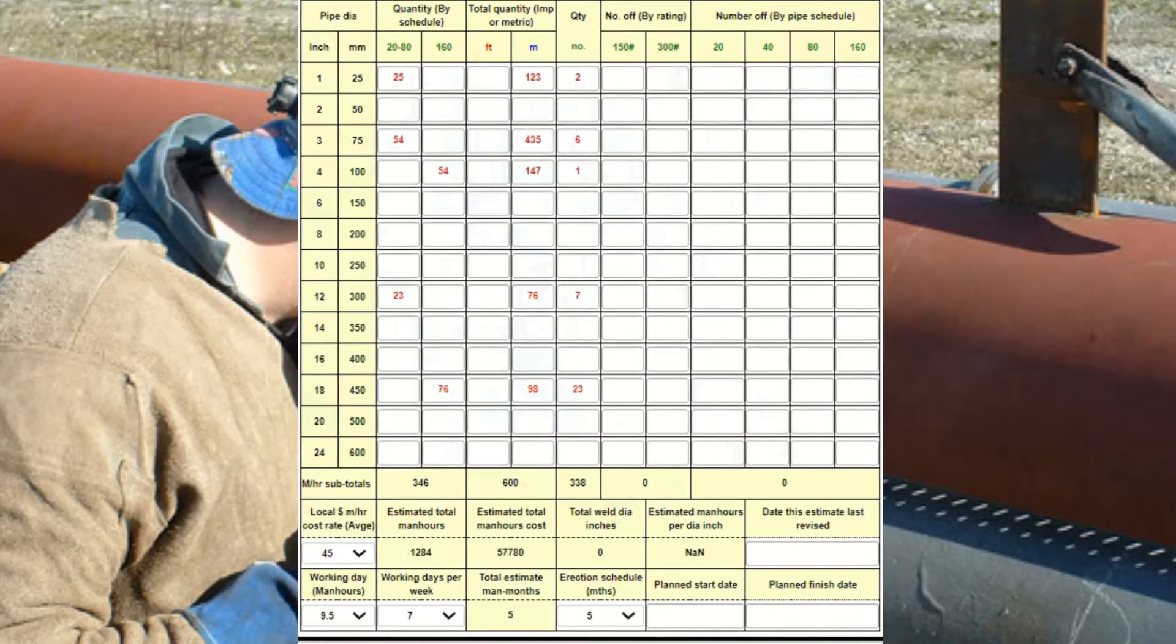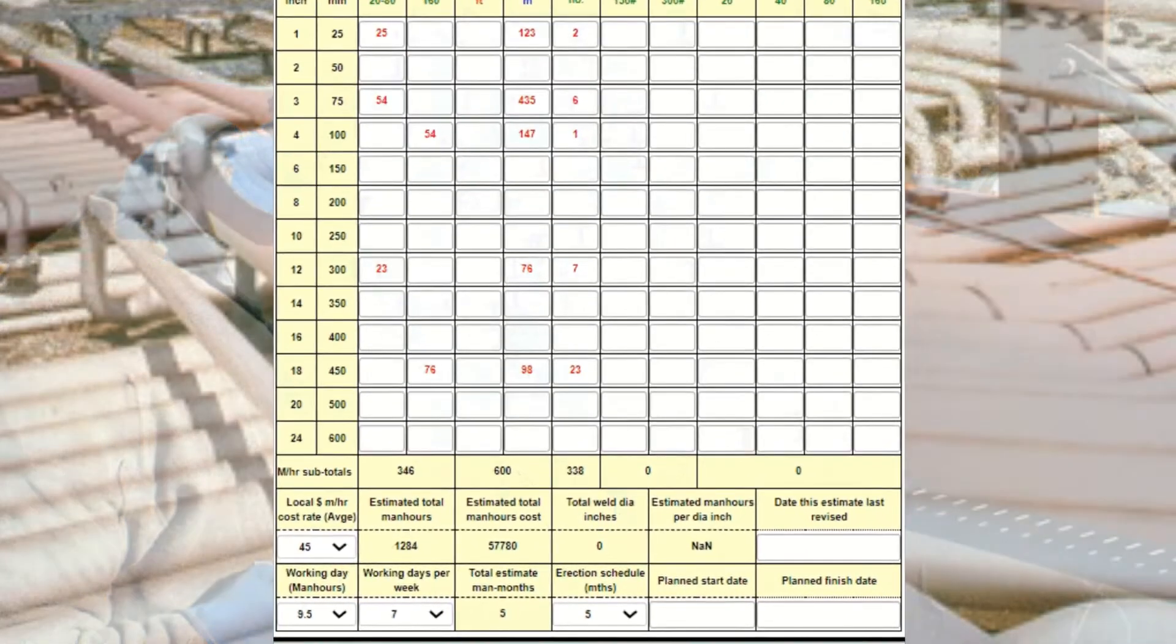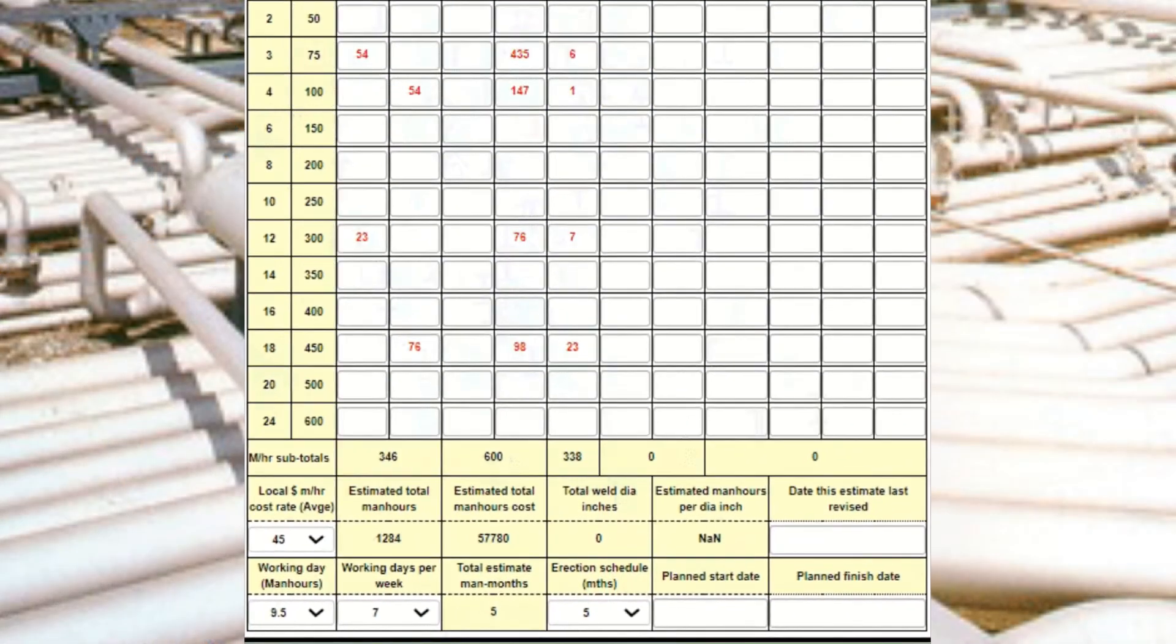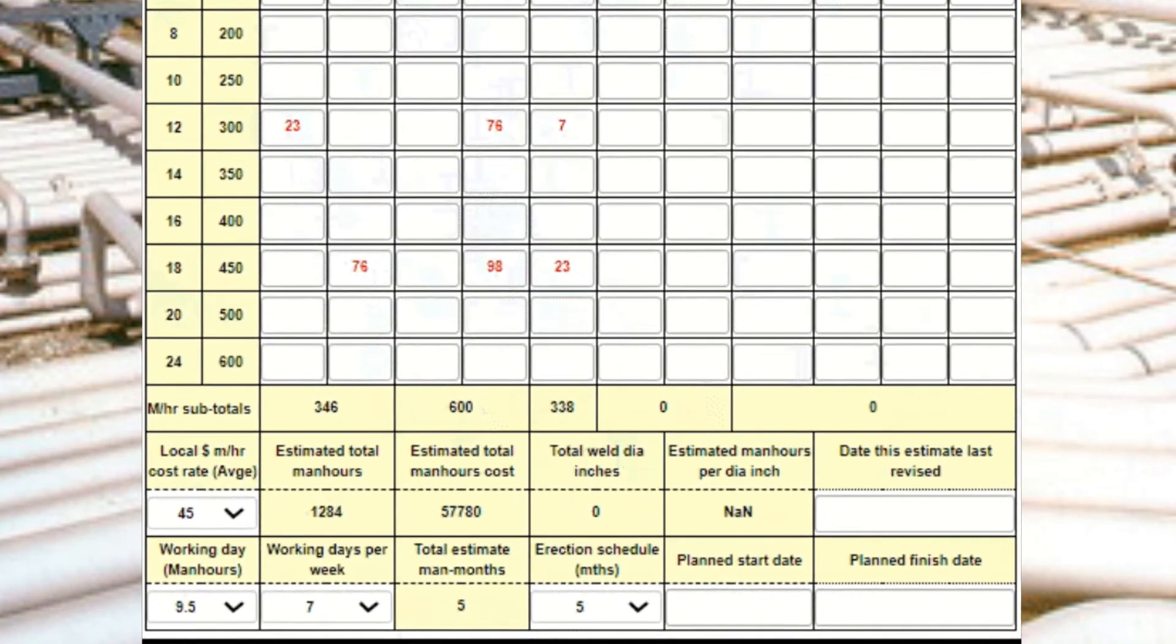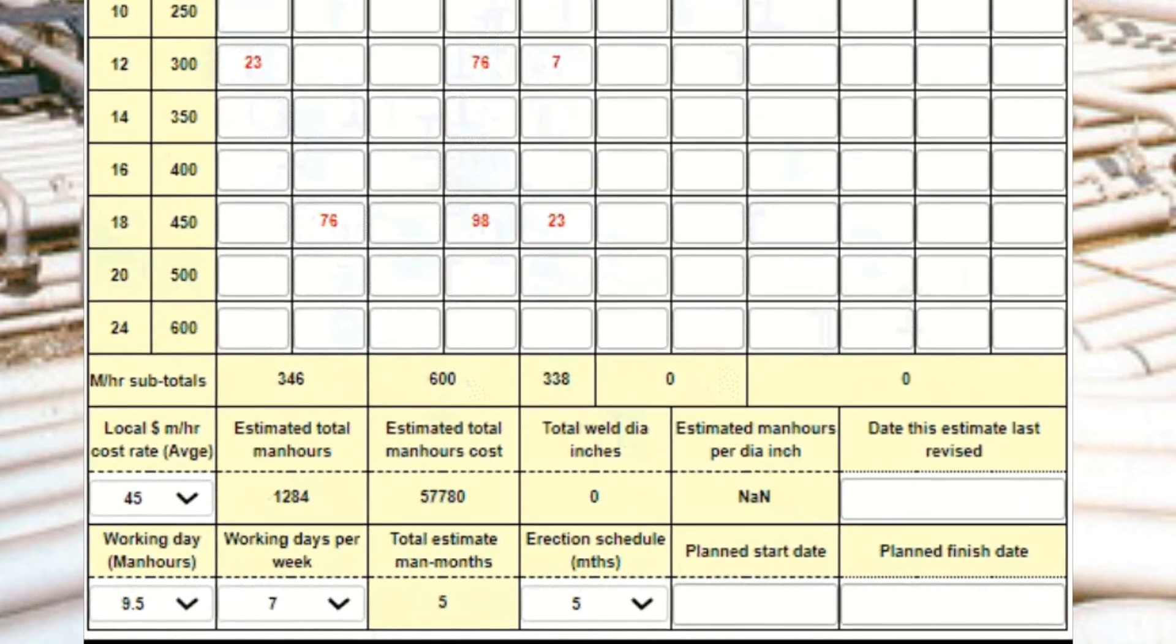As with any ballpark estimate, refinements can be made as more info becomes available. Also worth noting is that although we have not quantified welds in this example, we can see that preparatory work could keep five workers busy for one month.